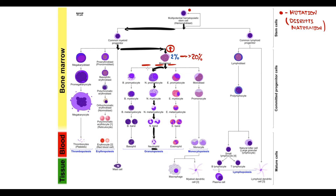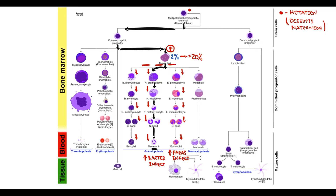Because myeloblasts cannot mature into promyelocytes, the amount of more mature forms of granulocytes begins to decrease — first promyelocytes, then myelocytes, then metamyelocytes, then band forms. At this point, so-called leukemic hiatus develops. Finally, when mature granulocytes die of old age, fully mature granulocytes also decrease. Decreased mature neutrophils put patients at risk of bacterial infections, and decreased mature eosinophils increase the risk of parasitic infections.